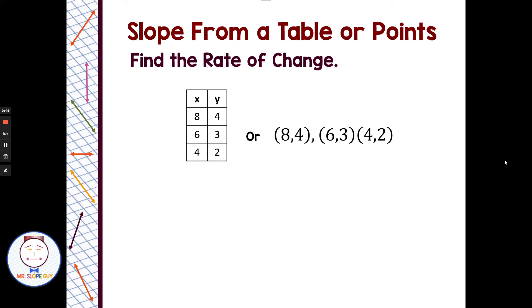Let's say we're asked to find slope or rate of change from a table or list of points. We have the points (8,4), (6,3), and (4,2) in table form and also as a list. This confuses people because we think of slope using 2 points in the slope formula, but here we're given 3 points.